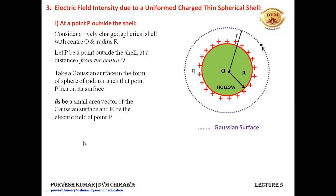We need to take a small area vector ds to calculate the flux. The formula is the integration of E dot ds. The area vector ds is always perpendicular to the surface — it acts radially outward along the radius. The electric field due to this uniformly charged thin spherical shell is also acting radially outwards from the positive charge. So both ds and E are pointing radially outward, and the angle between them is zero degrees.